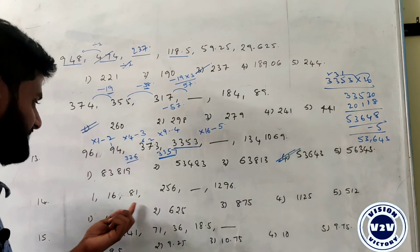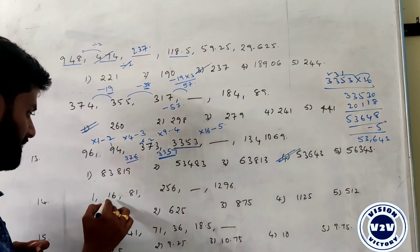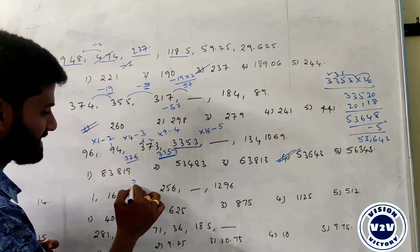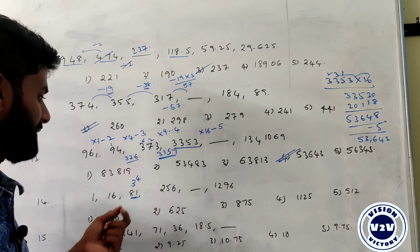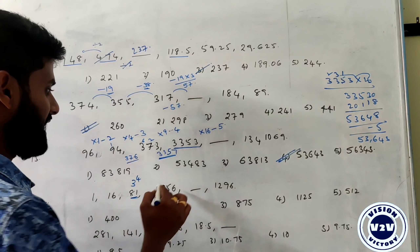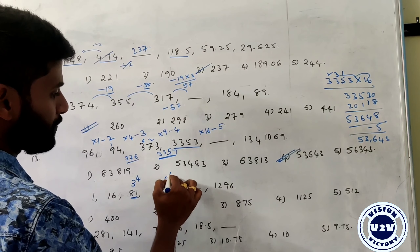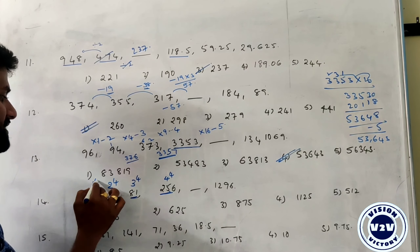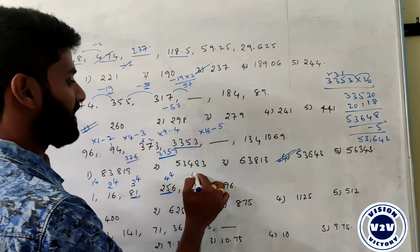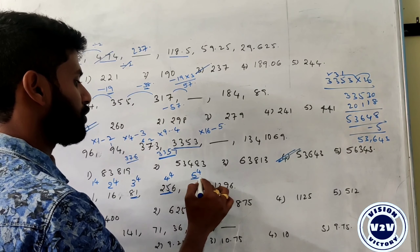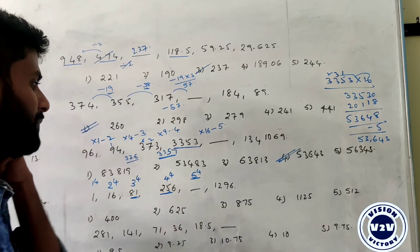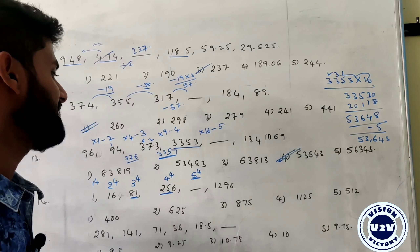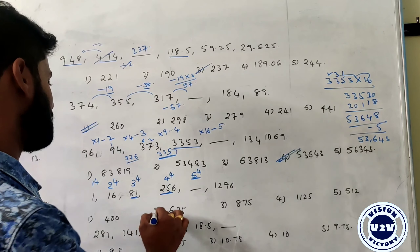Question 21: 1, 16, 81, 256. These are 1 to the power 4, 2 to the power 4, 3 to the power 4, 4 to the power 4. So the next term is 5 to the power 4 = 625. The answer is 625.